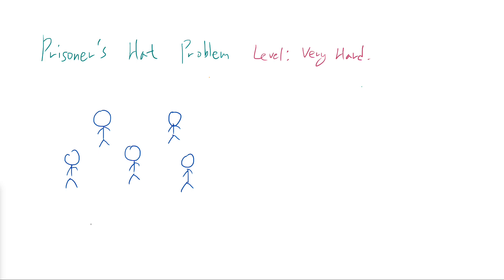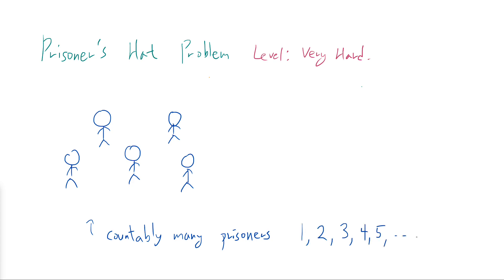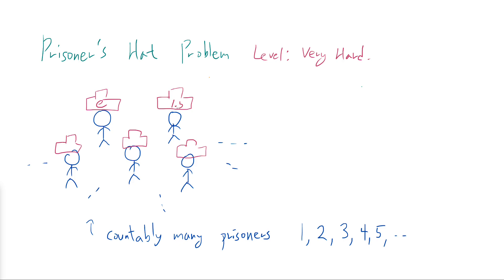First of all, you have countably many prisoners in the room, which means there is a one-to-one correspondence between the prisoners and the natural numbers 1, 2, 3, 4, 5, and so on. On the screen I just drew five of them, but there are infinitely many — countably many to be precise. On top of each prisoner there is a hat, and written on each hat is some real number. Maybe on this hat there's e, maybe on this hat there's 1.5, maybe on this hat there's negative 1.1 repeating. It can be an irrational number, a rational number, but there is a number written on every single hat.